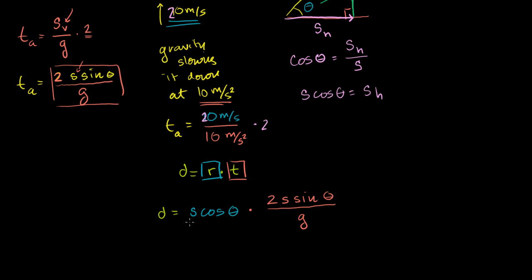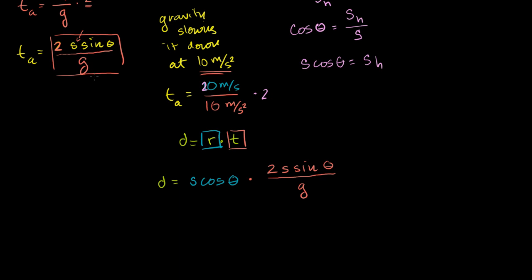So the total distance we're going to travel is straightforward. Rate times time is just the product of these two things. We can put all of the constants out front so it's clearer that it's a function of theta.